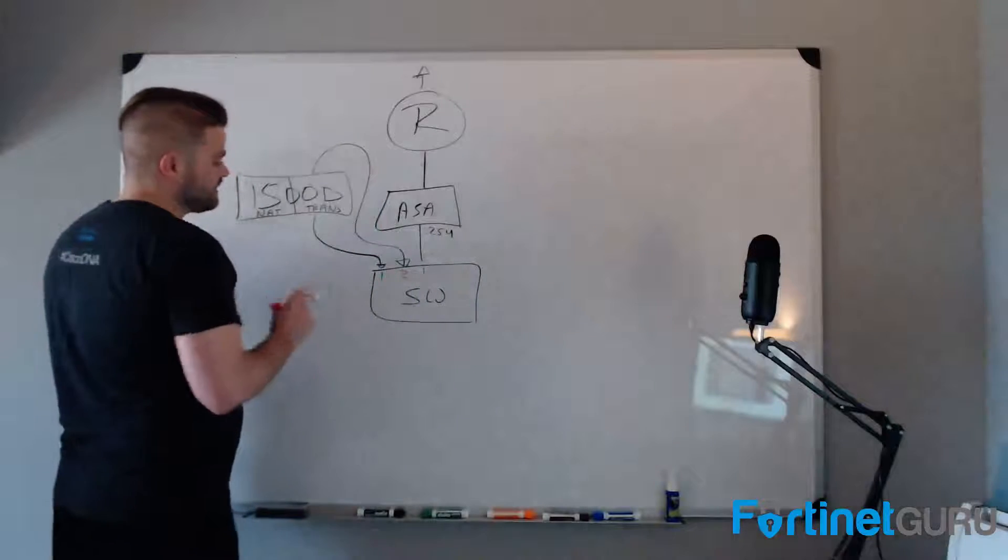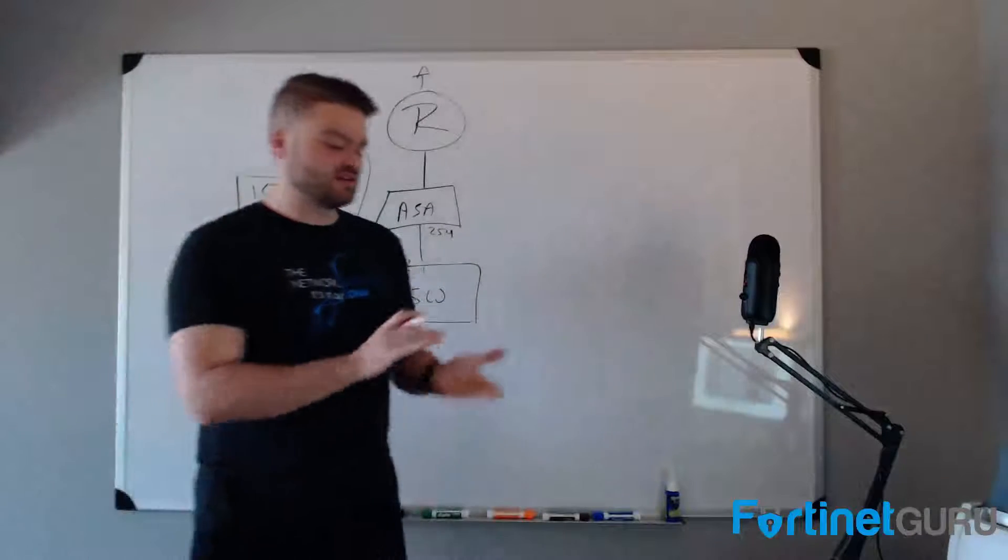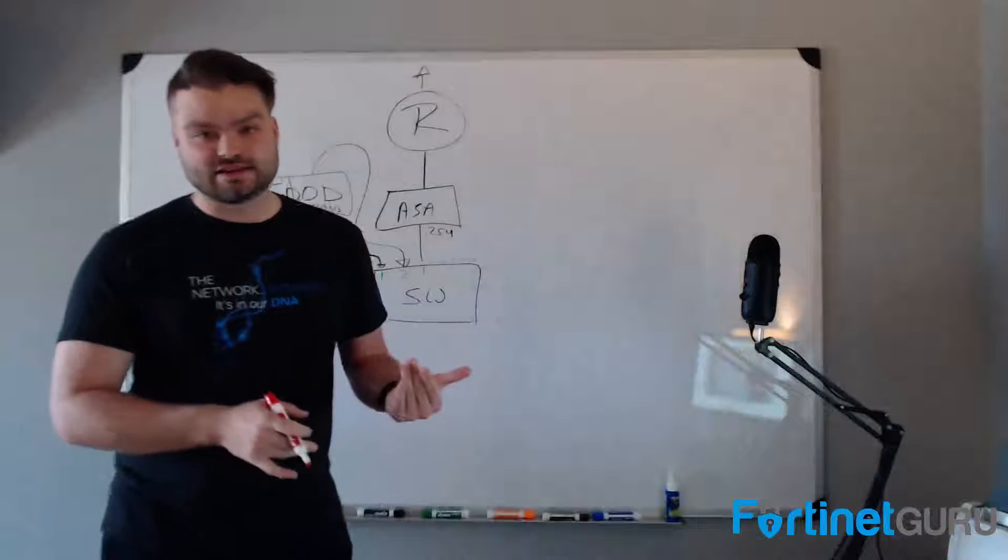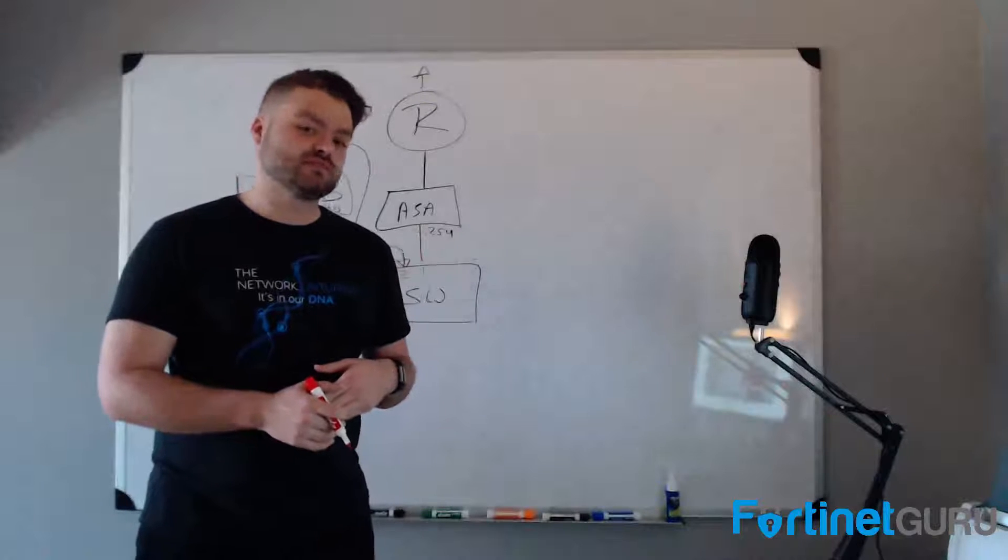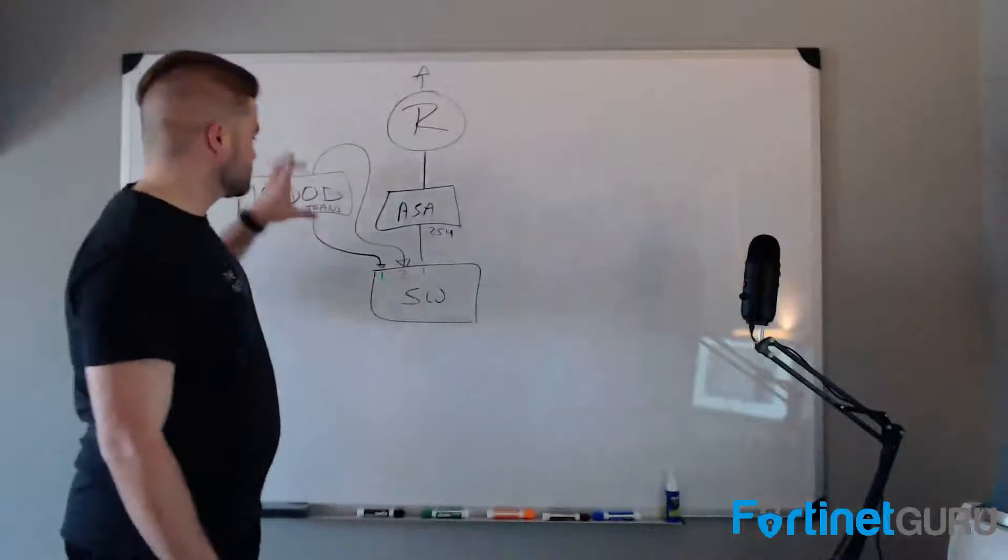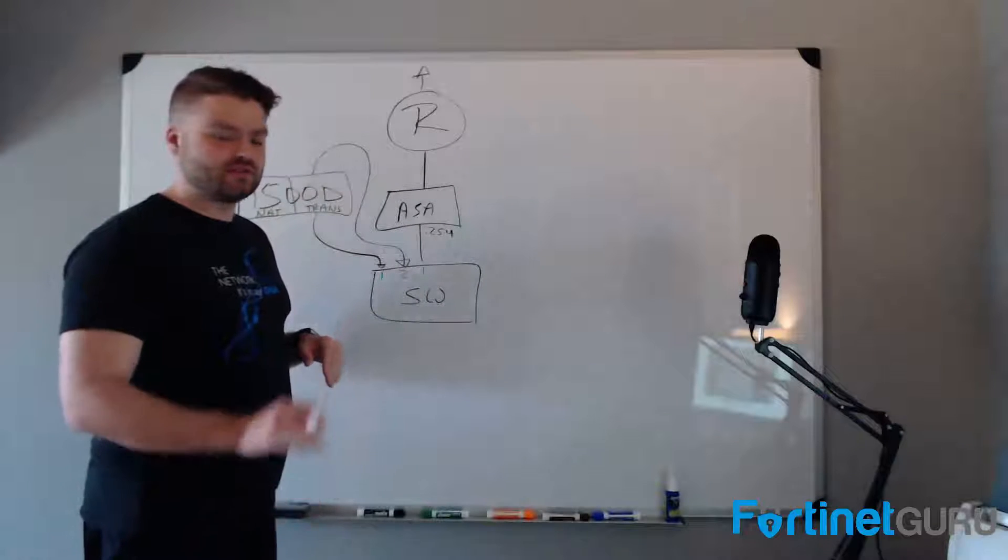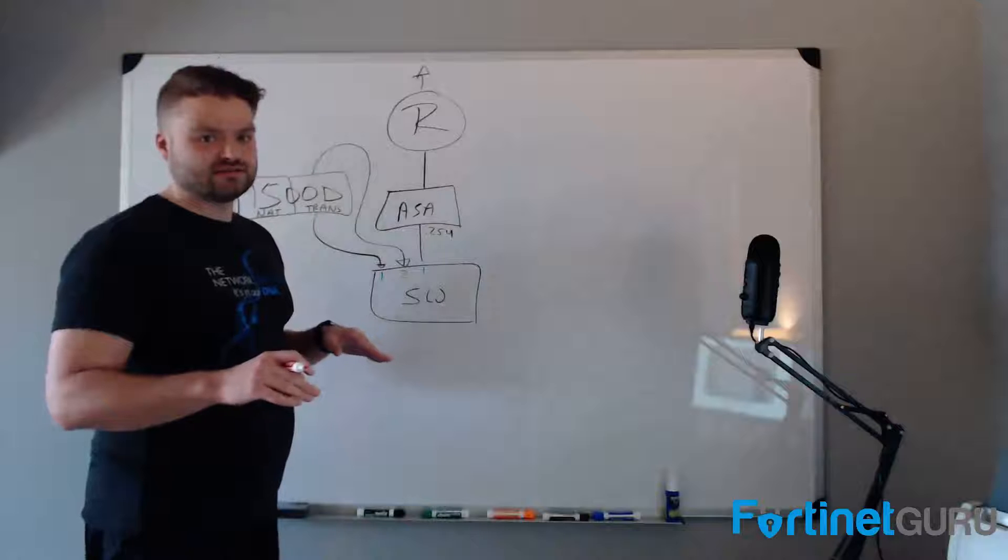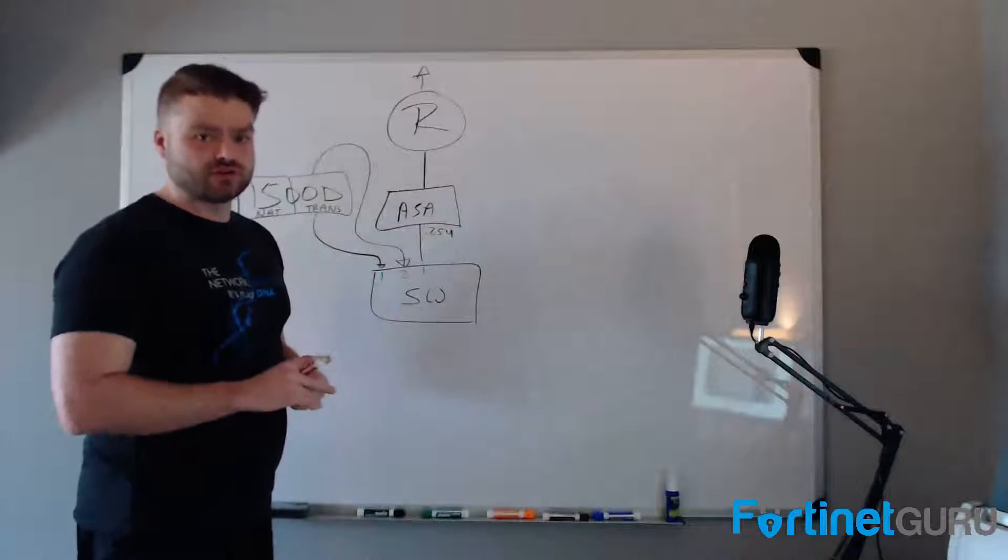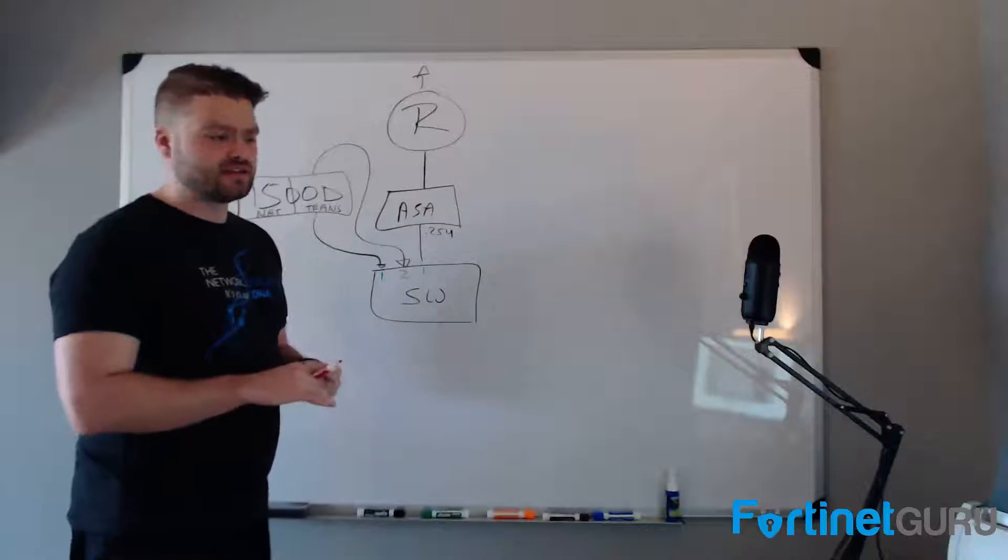And then we went through and we made sure that we had all of our policy, our inside to outside, our outside to inside policy with the appropriate UTM. Then, once we were sure that the transparent VDOM would flow traffic the way we needed it to, without killing anything, most of our UTM policies were in monitor-only mode for the start, so we wouldn't break anything unnecessarily.